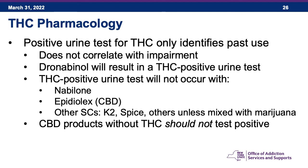It's important to remember that a positive urine test for THC only identifies past use — it doesn't correlate with impairment. You could have used last week and still test positive today without being impaired. Dronabinol will cause a positive THC urine test; nabilone will not. Epidiolex (pure CBD) will not cause a positive THC test. K2, Spice, and other synthetic cannabinoids will not come up positive on standard tests unless marijuana is mixed in — in that case, it's the THC from marijuana that would test positive.